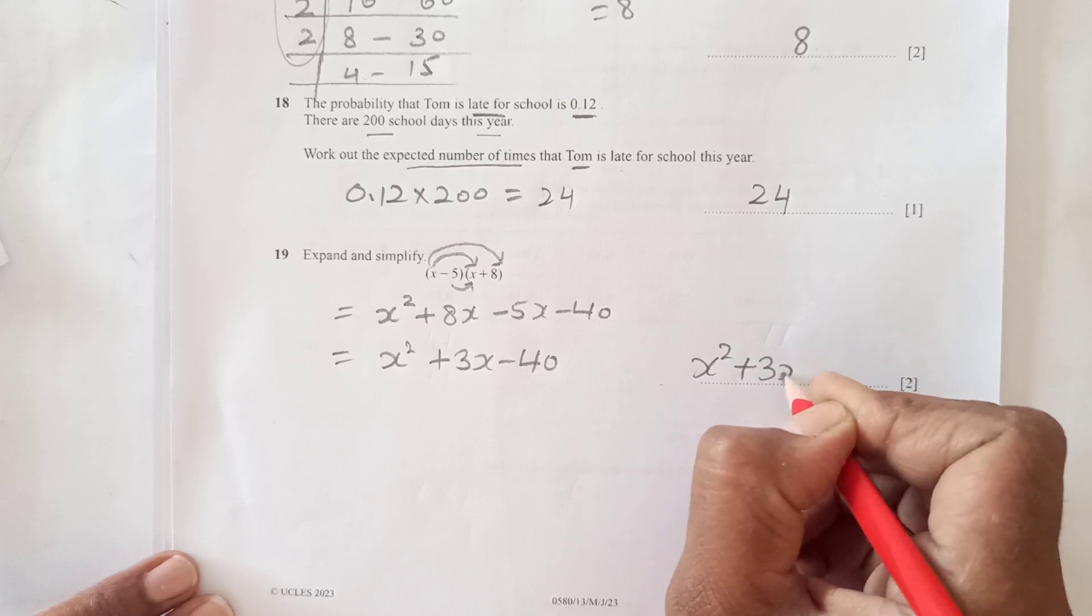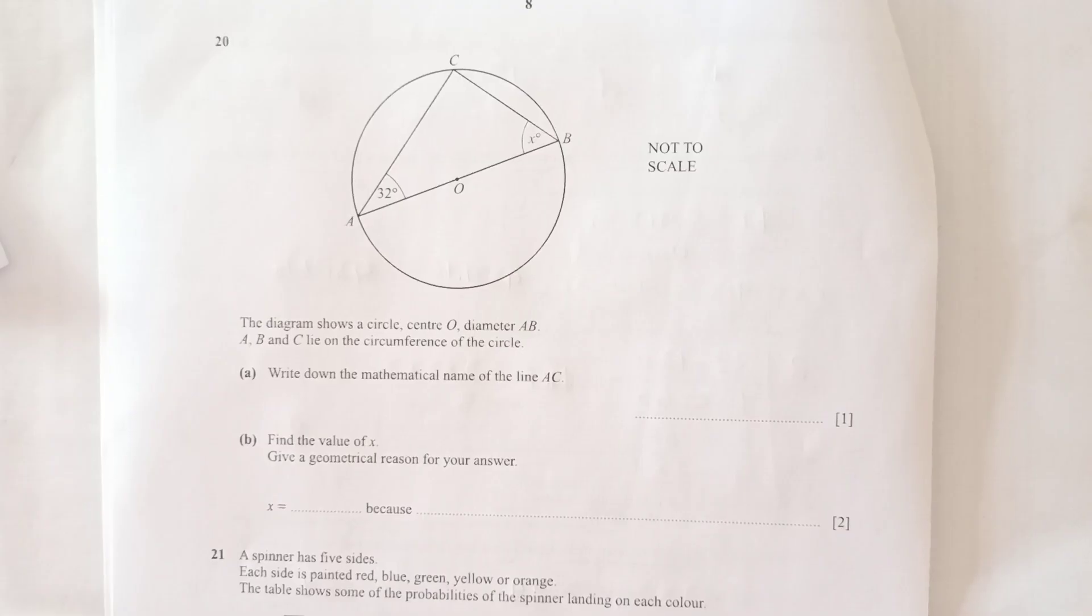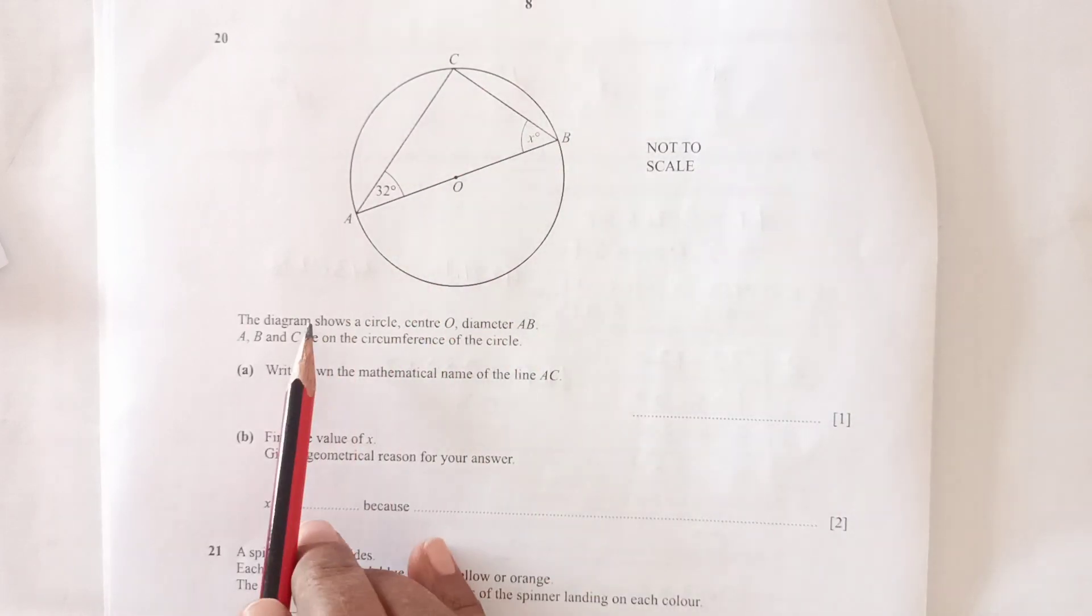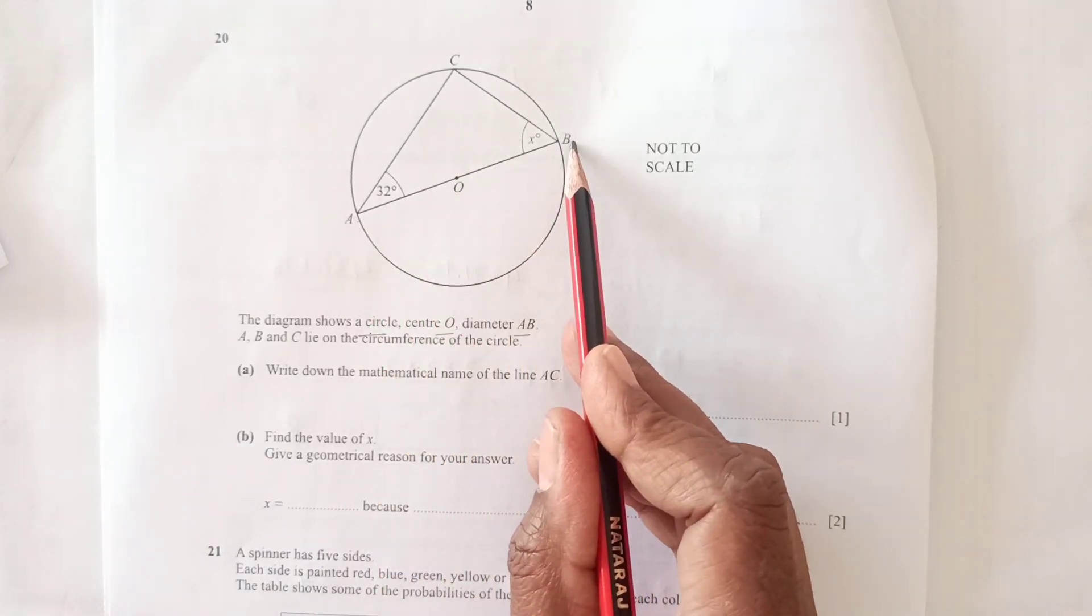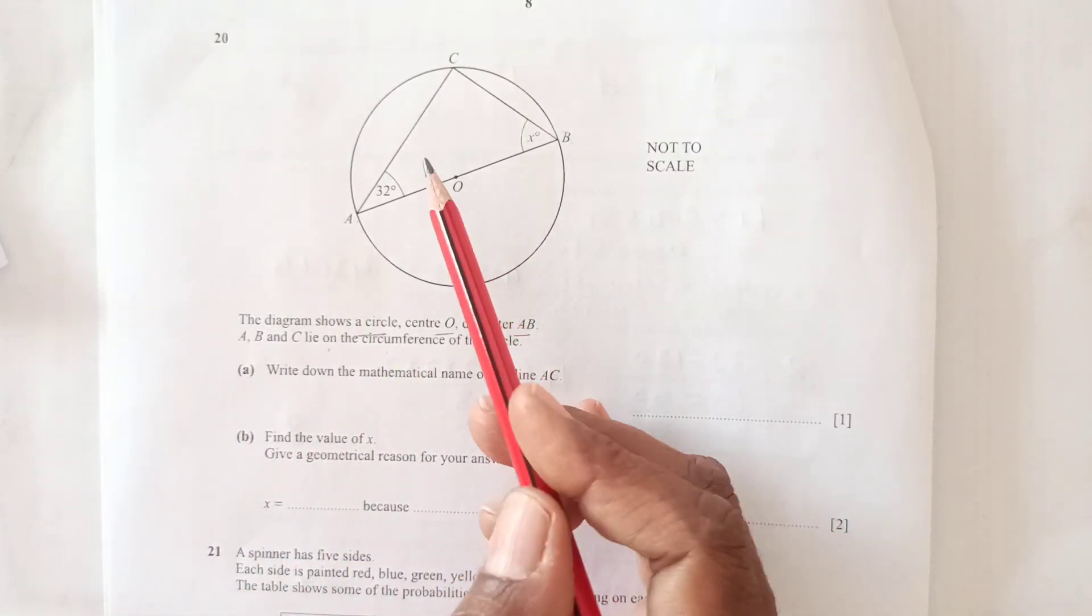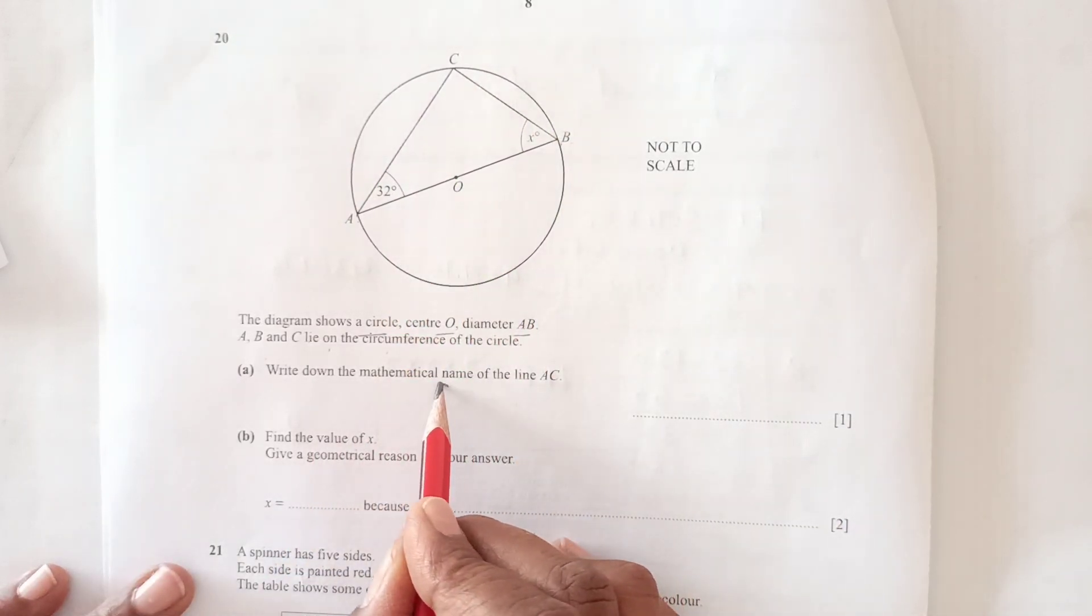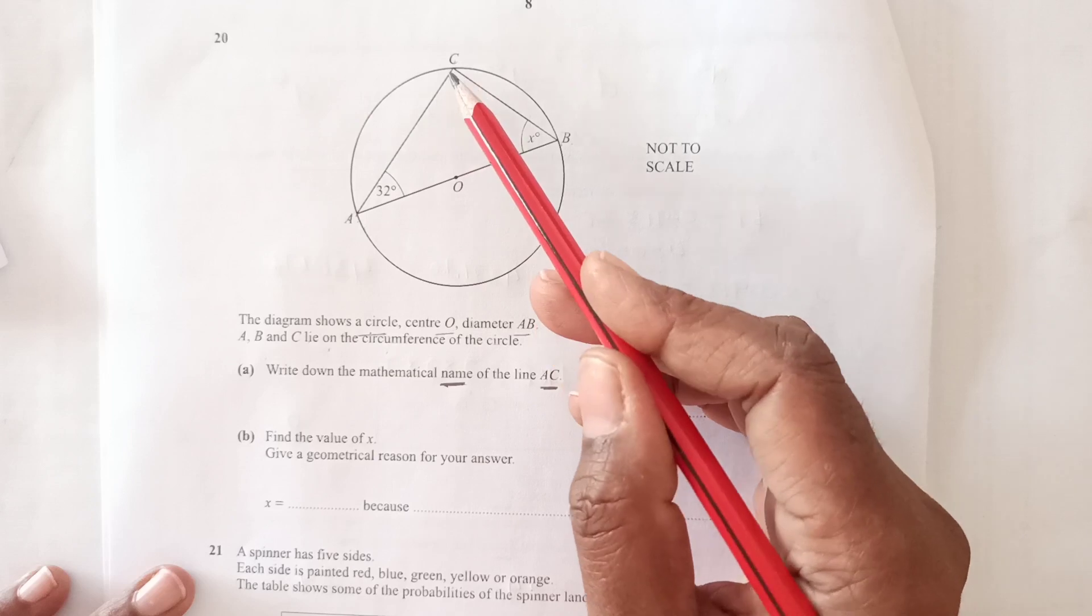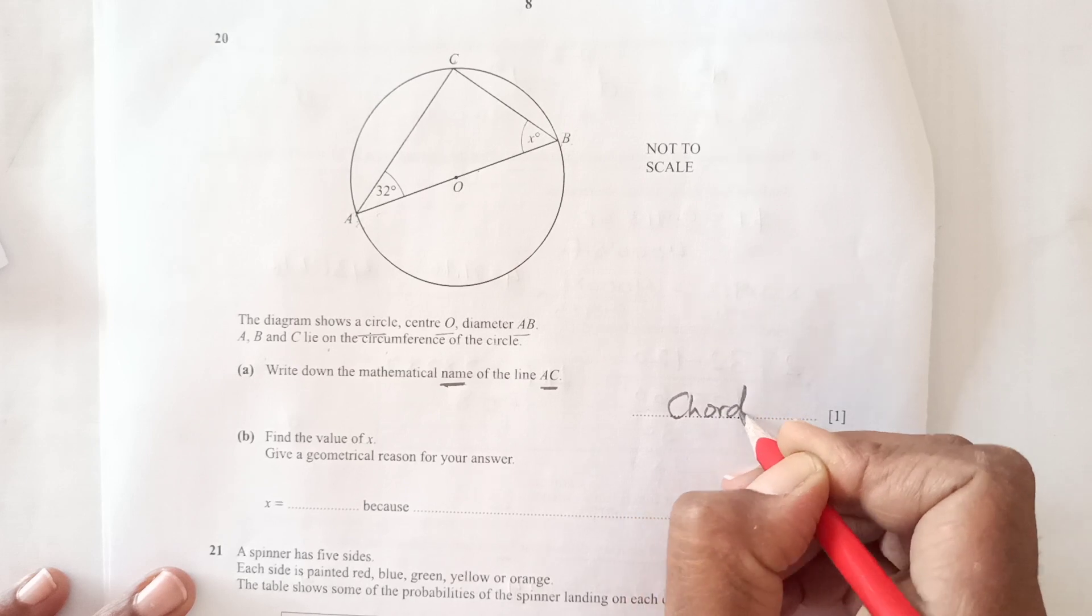Question number 20: The diagram shows a circle center O with diameter AB. Points A, B, and C lie on the circumference. Write down the mathematical name of line AC. AC is a line that touches the circle at two points but doesn't pass through the center, so this is a chord.